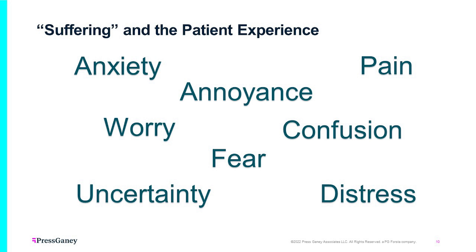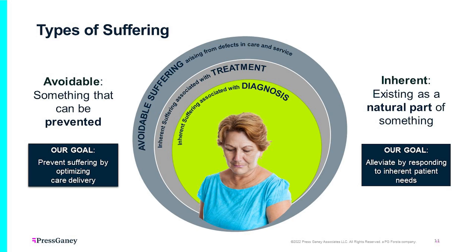We asked our patients what they consider suffering to be, and several words came up over and over again: anxiety, annoyance, pain, confusion, not knowing what's going on, worry, distress, and being afraid of what's coming next. One of the most interesting parts of this training is the two different types of suffering — things that are avoidable and can be prevented, and things that are inherent, meaning they exist as a natural part of the condition.